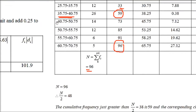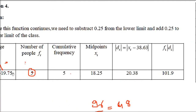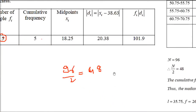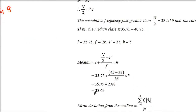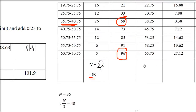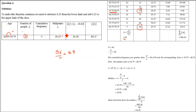The class width H = 5 (upper limit minus lower limit). Substituting into Median = L + (N/2 − F)/f × H gives the median. Then compute Di = |Xi − Median| for each row, multiply by fi to get fi×Di. Sum: Σ(fi×Di) = 988.36, divide by Σfi = 96, giving mean deviation ≈ 10.29.